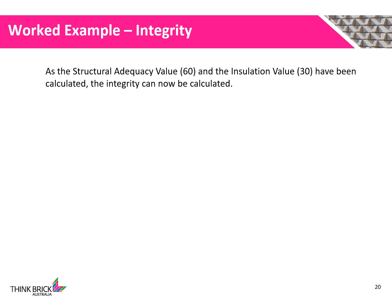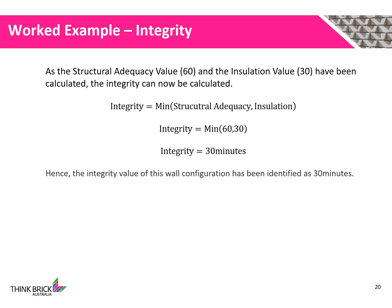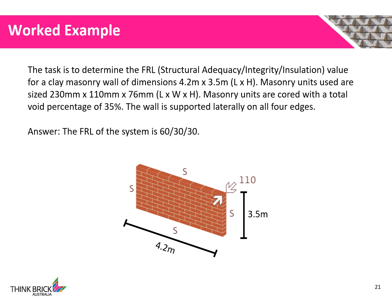Determining the integrity value is now a simple task, as we know the structural adequacy and insulation values. Selecting the minimum of the two values, we determine our wall's integrity value to be 30 minutes. With that, we've evaluated the FRL design for our masonry wall. It would be presented as a 60-30-30 wall, as annotated by the NCC.